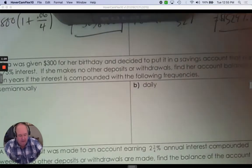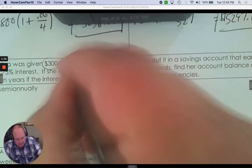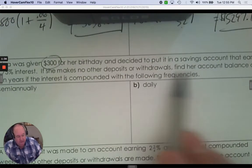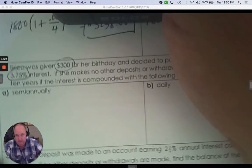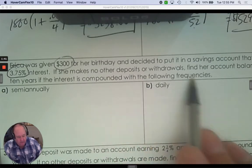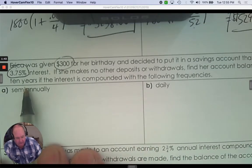Number two. Erica was given $300 for her birthday and decided to put it in a savings account that earns 3.75%. If she makes no other deposits or withdrawals, find her account balance after 10 years.